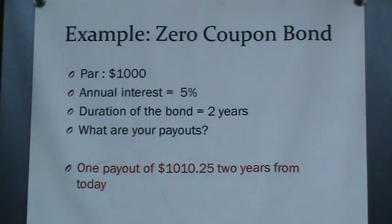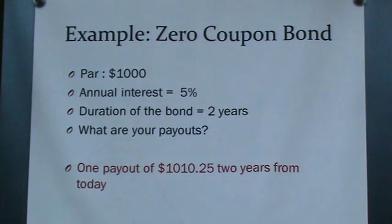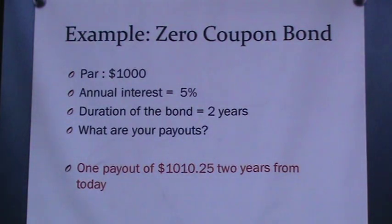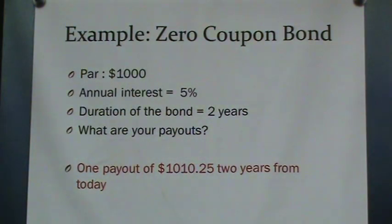If we have a zero-coupon bond, that means you give money on the first day and receive one big check on the last day — no payments along the way. For example: par of $1,000, annual interest rate of 5%, lasting exactly two years. What are your payouts? Since it's zero-coupon, there's only one big payment at the end. At 5% for two years, we get $1,000 times (1.05)^2, which equals $1,102.50. That's what you'll receive two years from today.